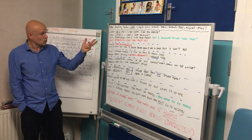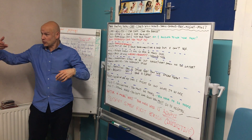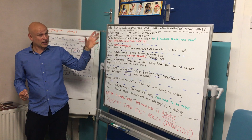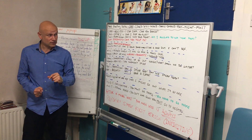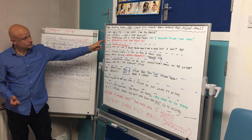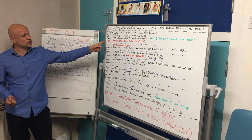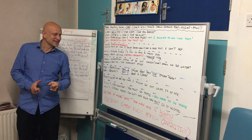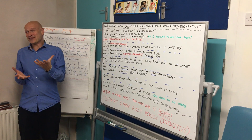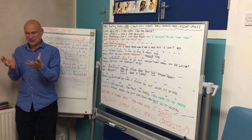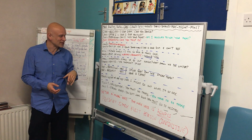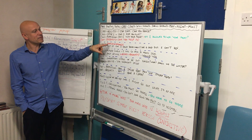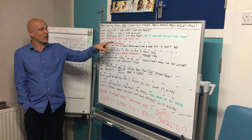We use 'can' for offers — I can give you an egg — or permission: can I use your phone? We also use 'can' for requests: can you help me? I wrote it in red because I thought I was going to do something really special but it all went wrong.